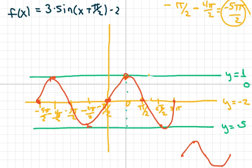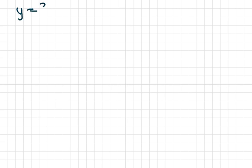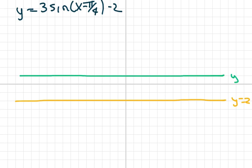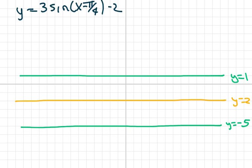The last one we're going to do is y equals three times sine of x minus pi over four, minus two. Our shift is down by two, which is y equals negative two. From here I'm going to add my amplitude, which is three, so we're going to go up three — this is y equals one — and we're going to go down three, which is y equals negative five. My phase shift is pi over four, so I'm going to draw pi over four here. My period is two pi.